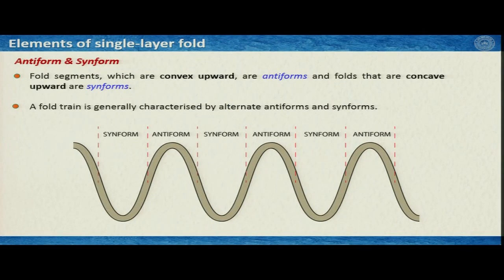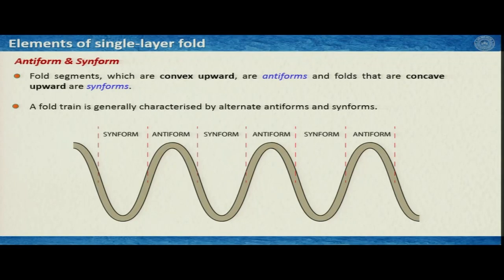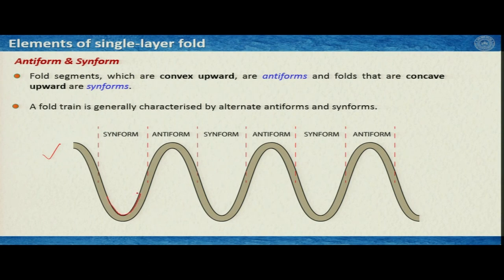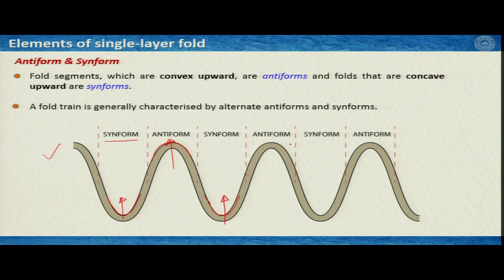Two very important terminologies related to fold geometry and description are antiform and synform. Fold segments which are convex upward are antiforms, and folds that are concave upward are synforms. A fold train is generally characterized by alternate antiforms and synforms. Where the concavity is upward, that is a synform; where the convexity is upward, that is an antiform. A synform is where the fold closes downwards, and an antiform is where the fold closes upwards.